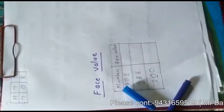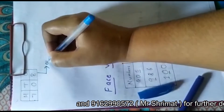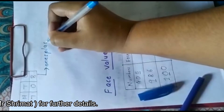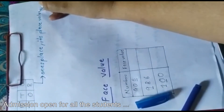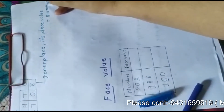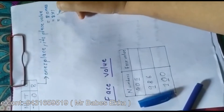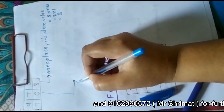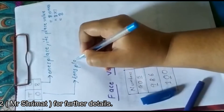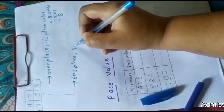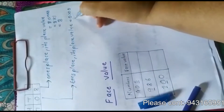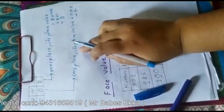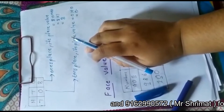Now let us consider one more example. The number is 708. You can see here 8 is at ones place, so 8's place value will be 8 ones, which means 8 into 1 equals 8. In the same way, 0 is at tens place, so its place value will be 0 into 10, which equals 0.